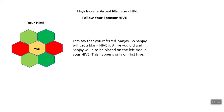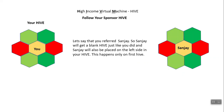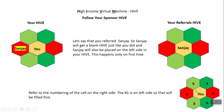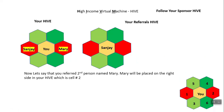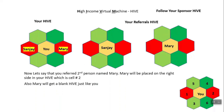Let's say that you referred Sanjay. Sanjay will get a blank Hive just like you did and will be placed on the left side of your Hive. Refer to the numbering of the cells: number 1 is placed on the left and number 2 on the right. So the first referral goes on the left and the second on the right. Now if you referred a second person named Mary, Mary gets a blank Hive and is placed in cell number 2. You need to note that even though you referred Sanjay and Mary in cells 1 and 2 and they both paid $10, you are not going to get this commission — it is going to be passed up to your sponsor.